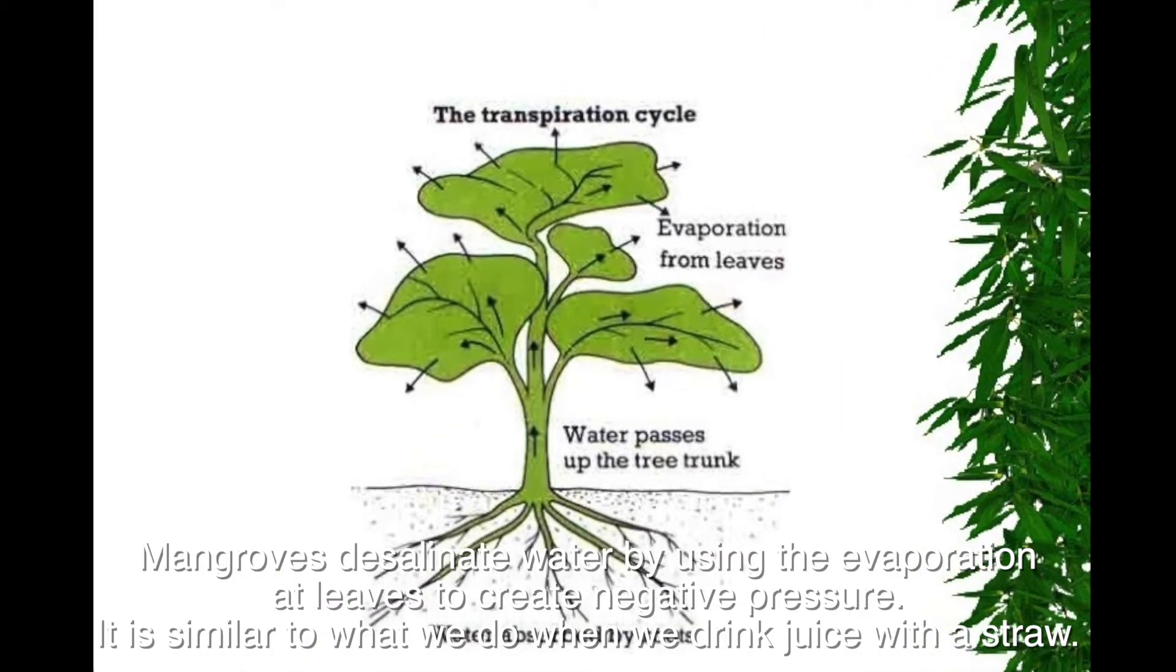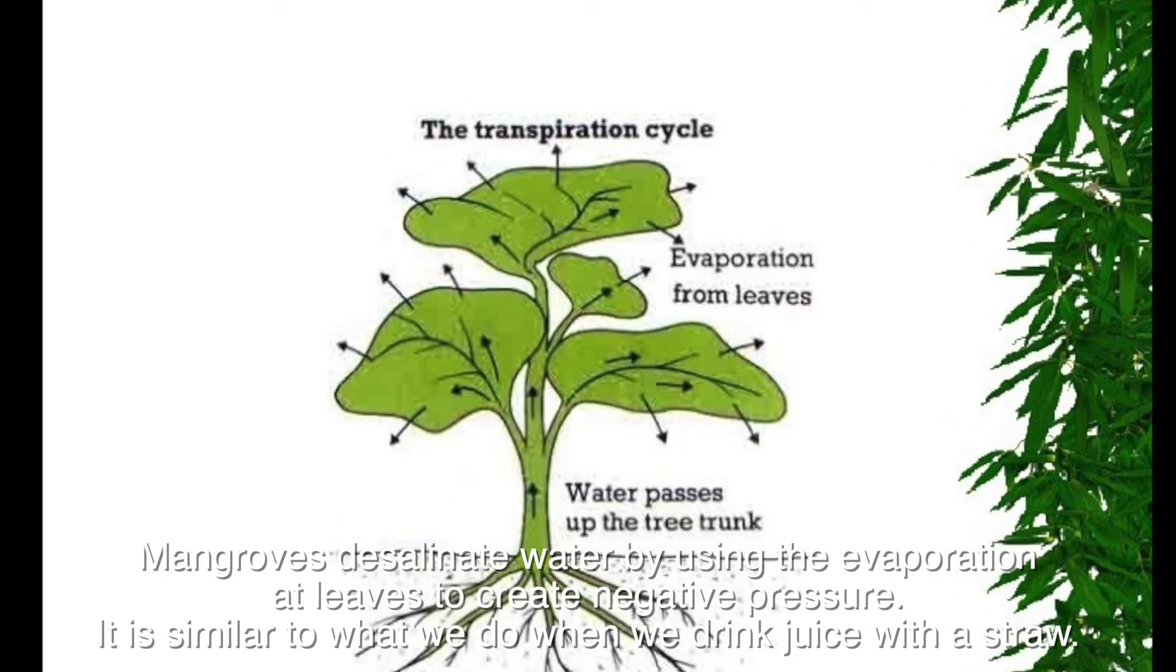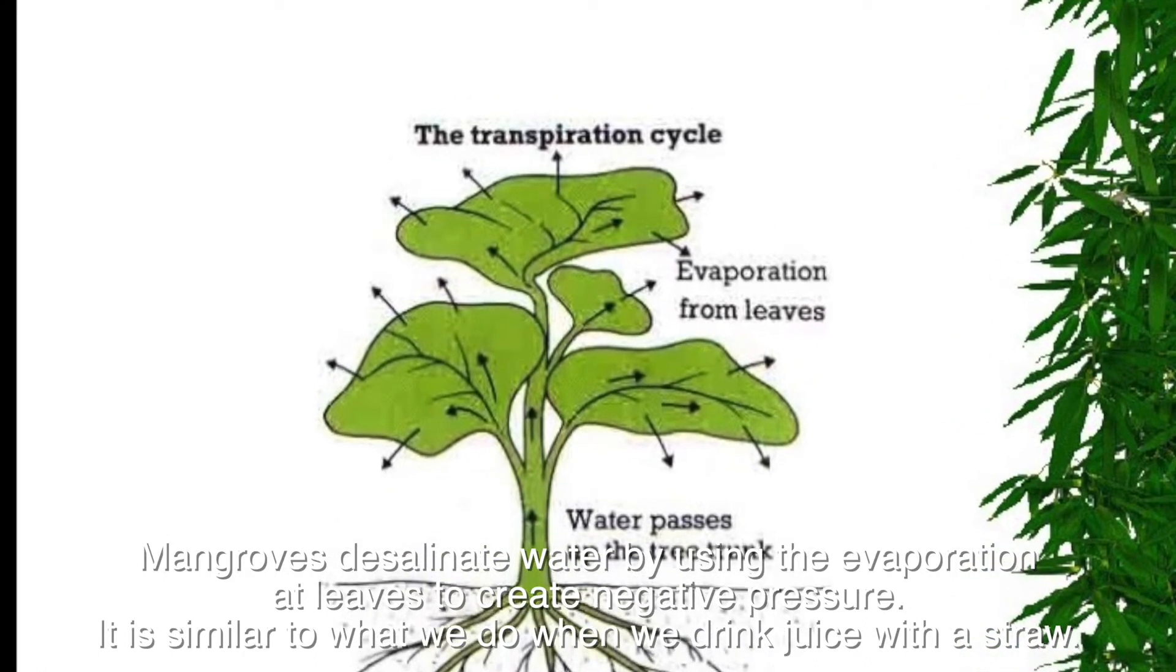Mangroves desalinate water by using evaporation in leaves to create negative pressure. It is similar to what we do when we drink juice with a straw.